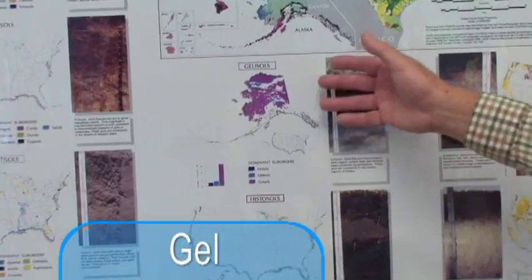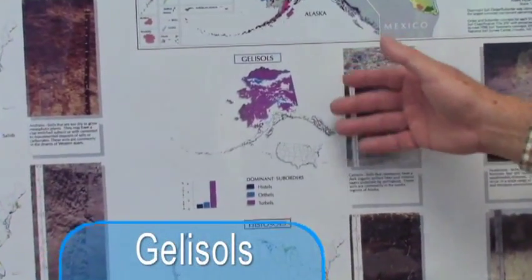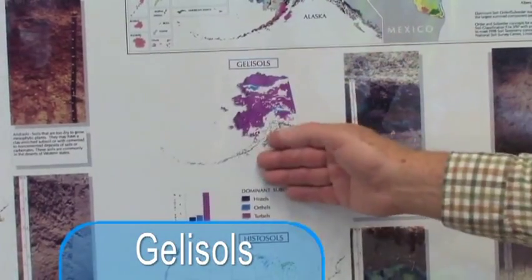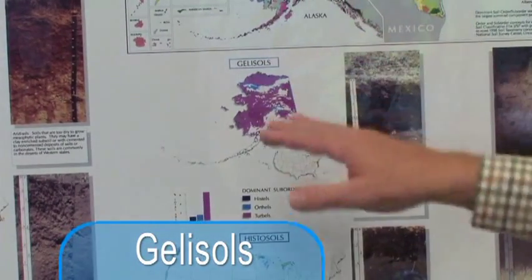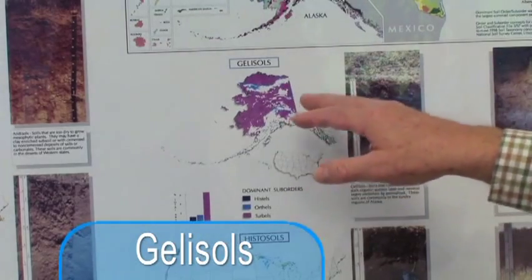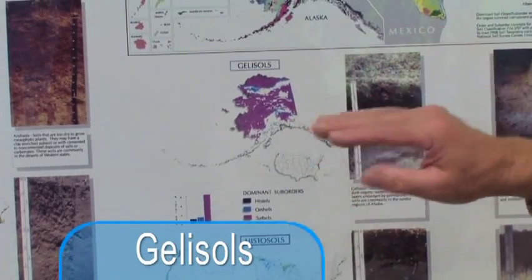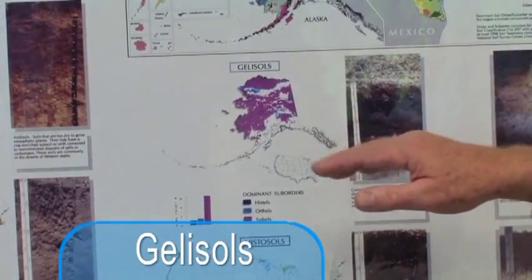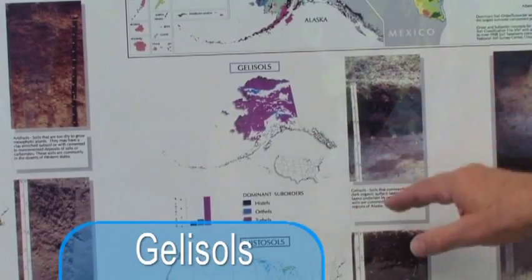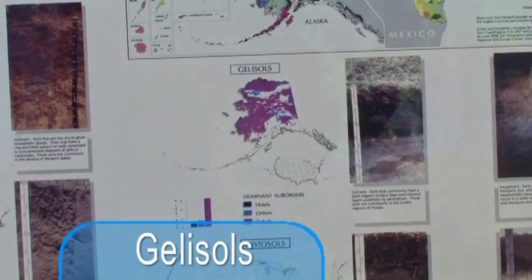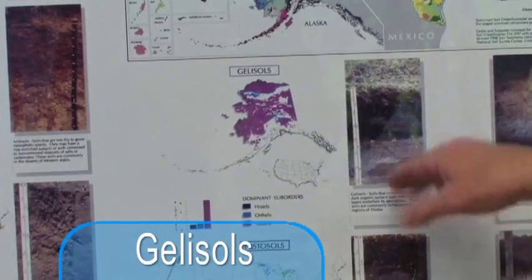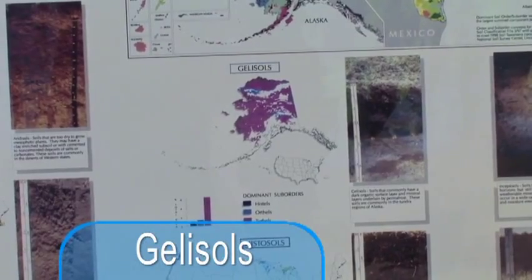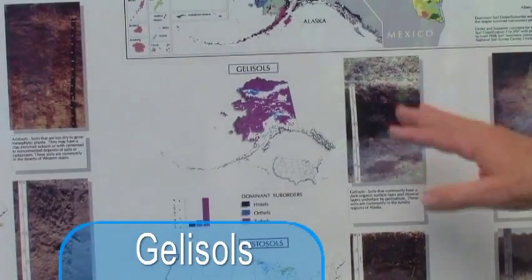The youngest soils in the U.S. are actually, as you would expect, the gelisols — Alaska. These are soils that are permanently frozen in many areas, or really have very short seasons of temperatures above freezing, so there's very little development. It's an area where there's a lot of organic matter that accumulates on top, but usually underlain with permafrost and typically referred to as tundra regions.